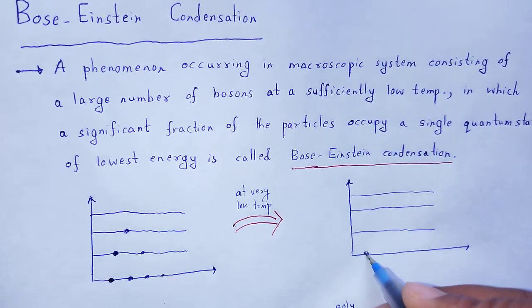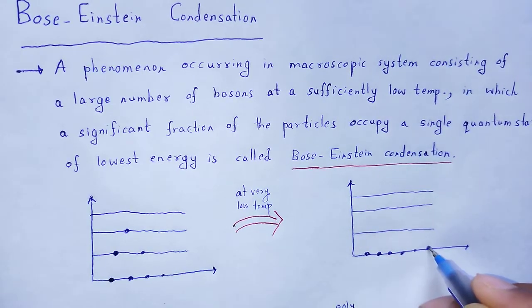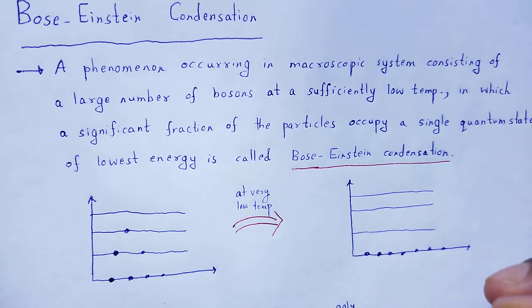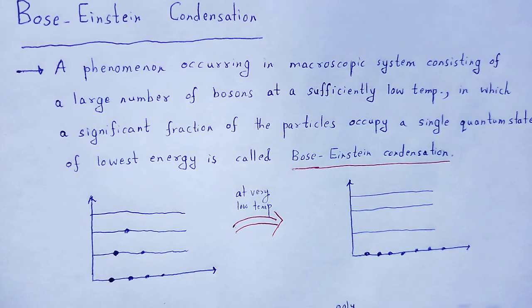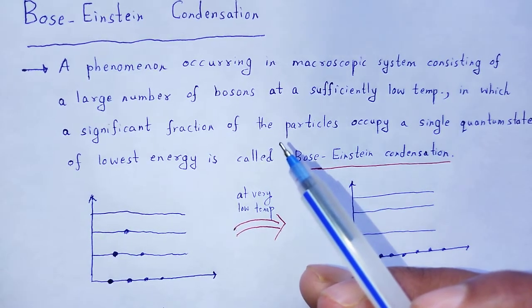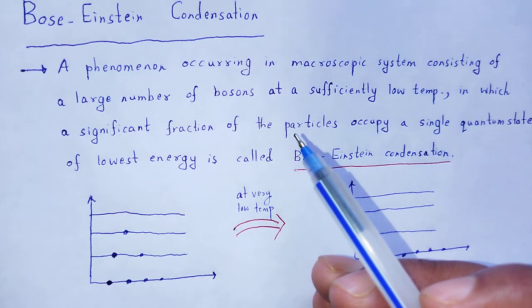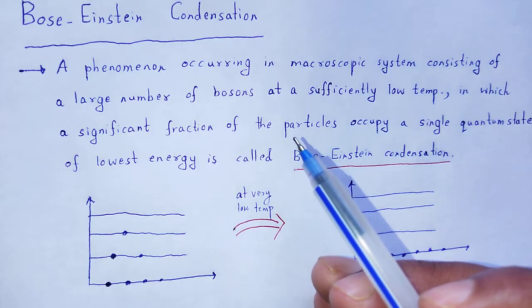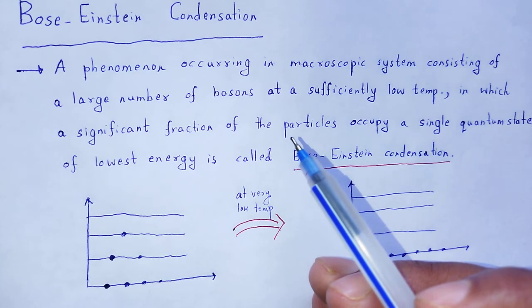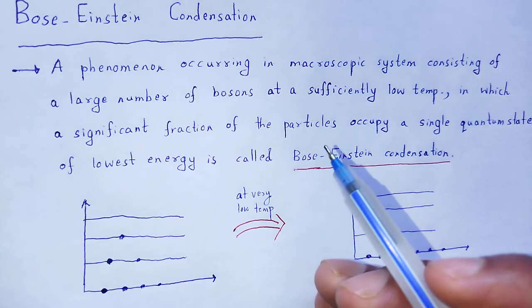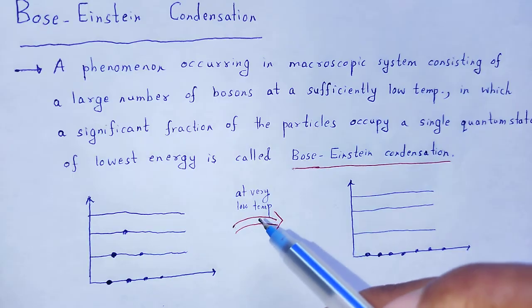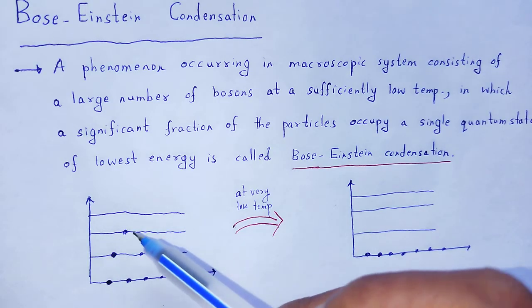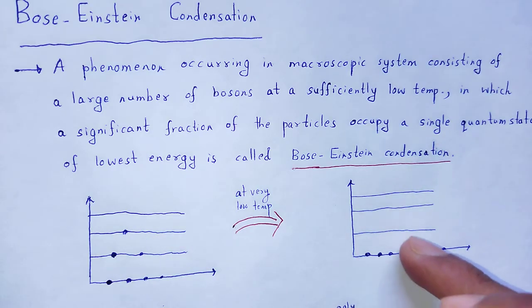In the ground state, suddenly the number of bosons increases. Why are all the bosons in that single quantum state? Because bosons do not obey Pauli's exclusion principle. According to Pauli's exclusion principle, it forbids two identical particles from occupying a single quantum state or single energy level. Since bosons do not obey Pauli's exclusion principle, at very, very low temperature the bosons present at higher energy levels are transferred to the lower energy level.